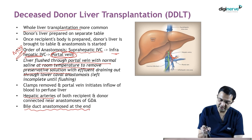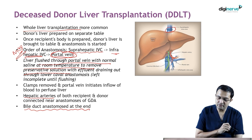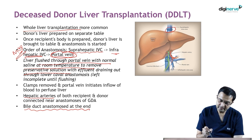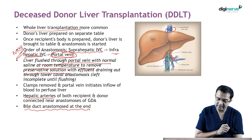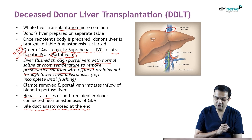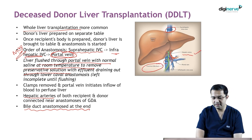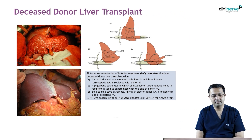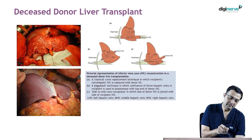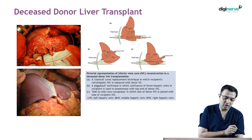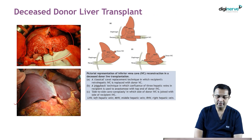To summarize: first is anastomosis of the suprahepatic cava, then the infrahepatic cava, then portal vein anastomosis. Before completing portal vein anastomosis, you flush the liver; then after reperfusion, you do hepatic artery anastomosis, and finally common bile duct anastomosis. Here you can see the liver with chronic liver disease has been replaced with the new liver.